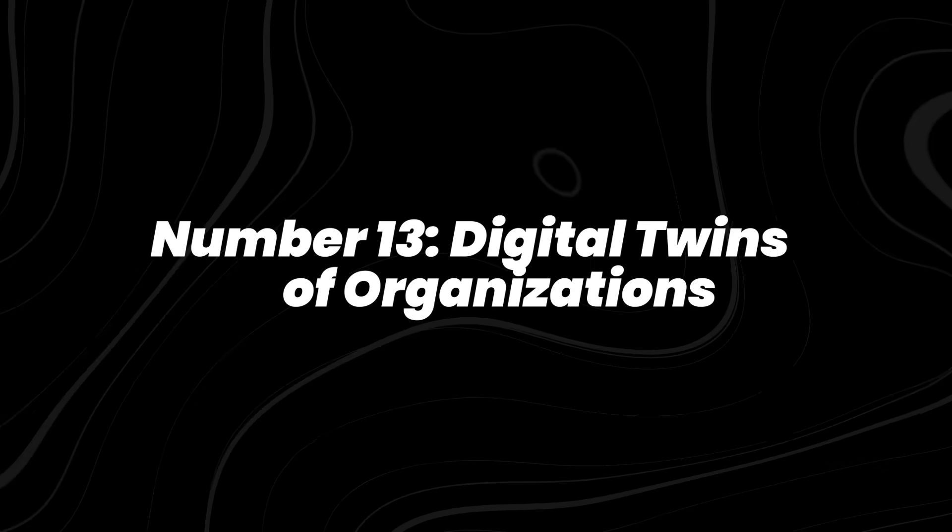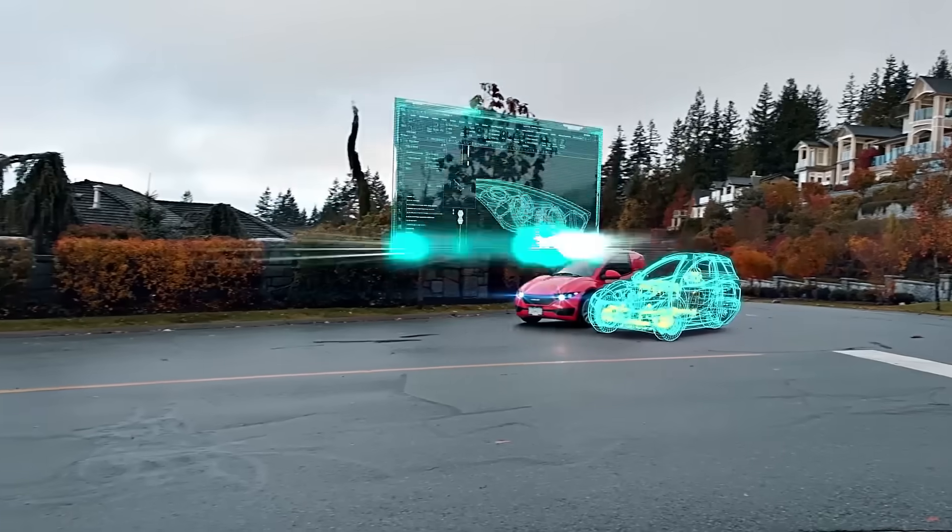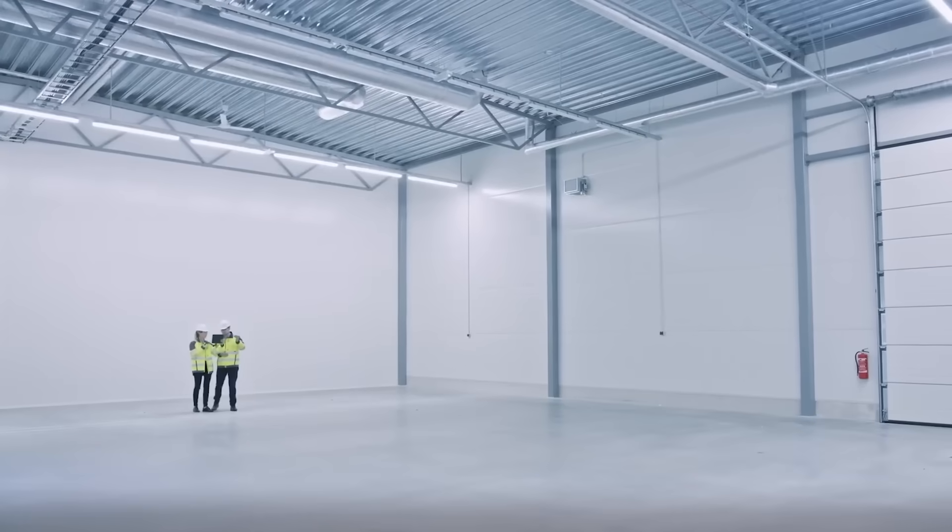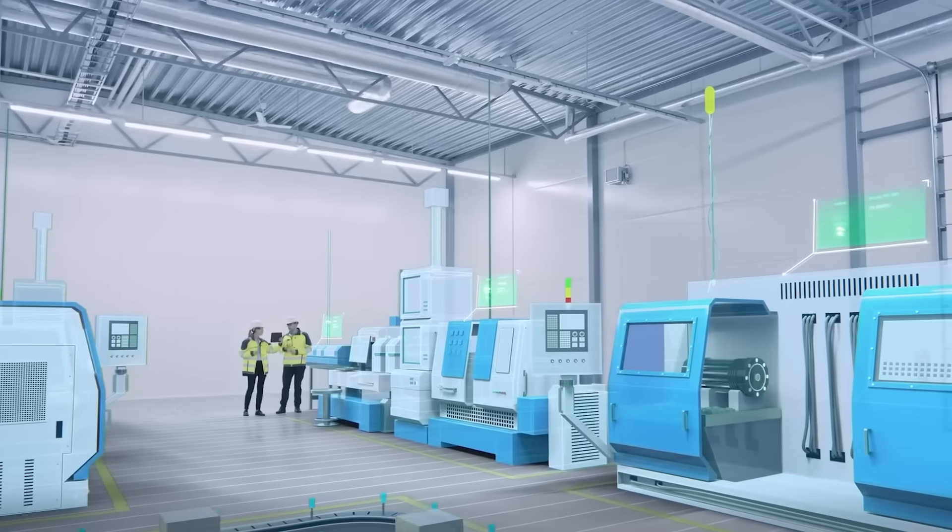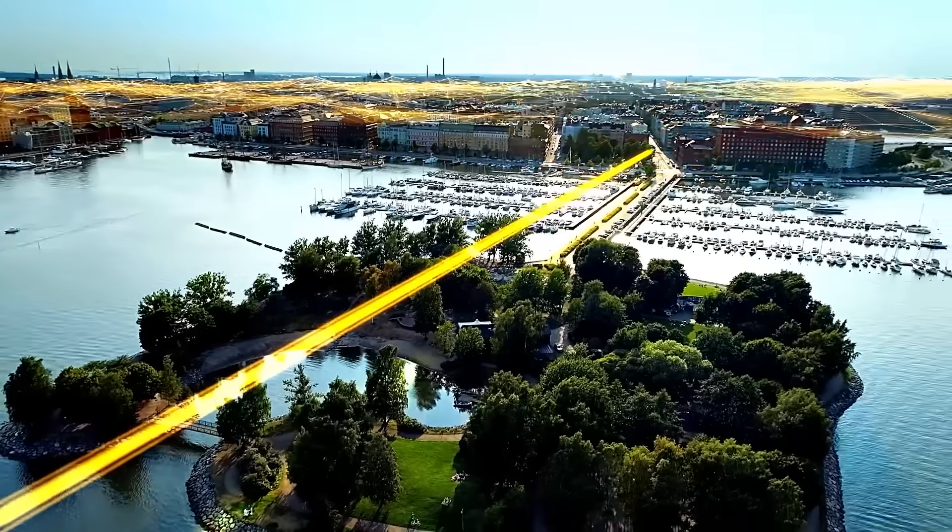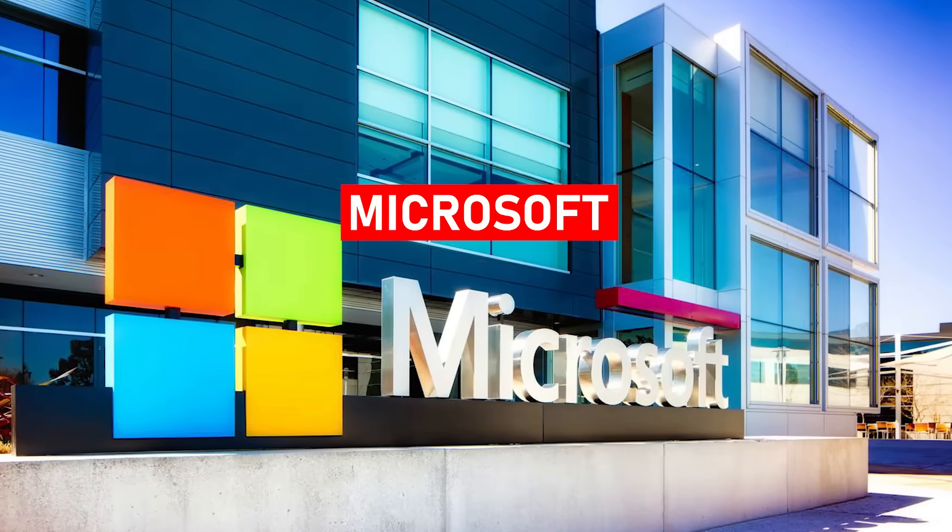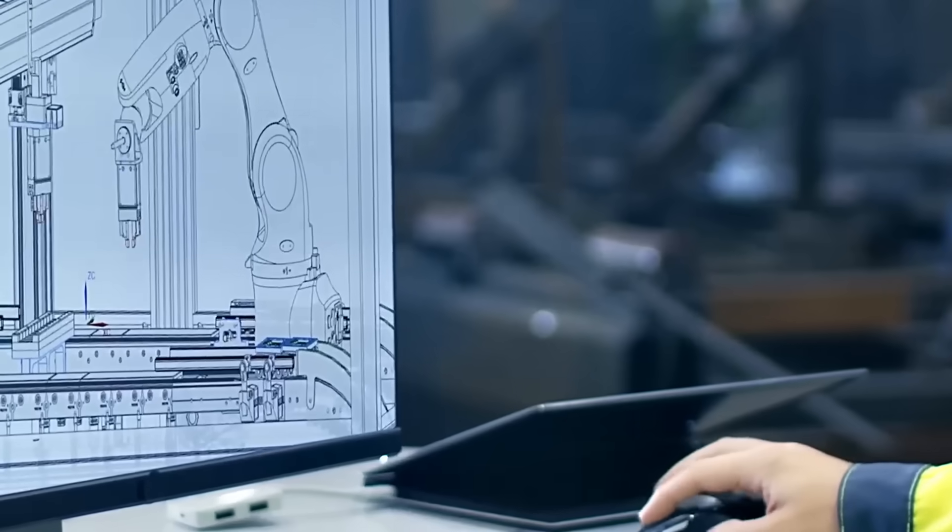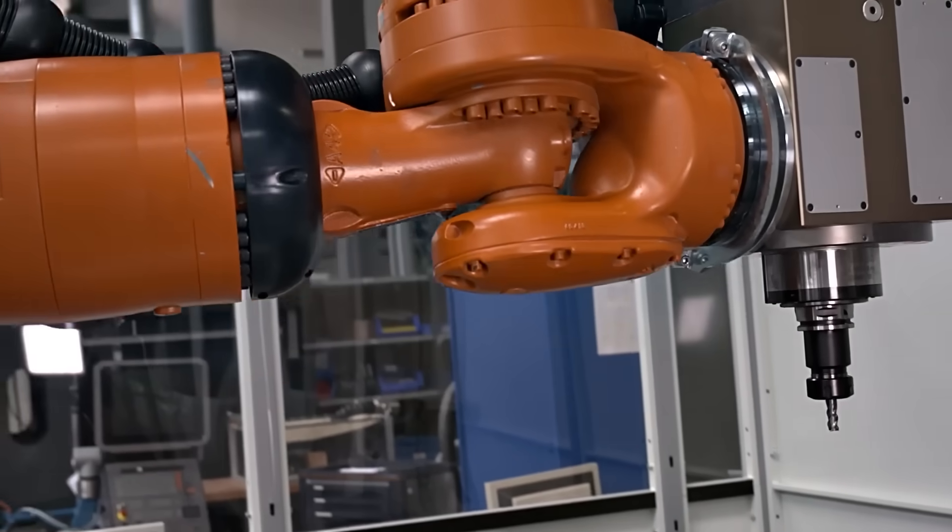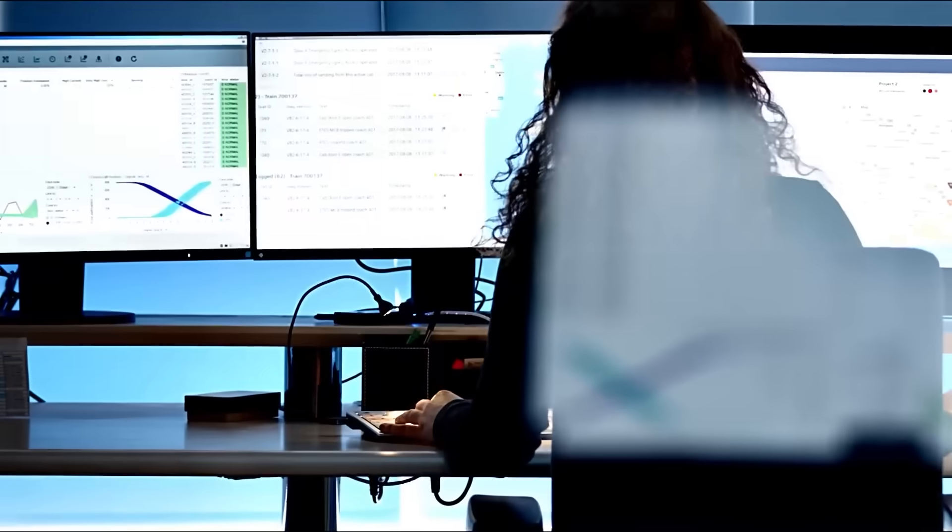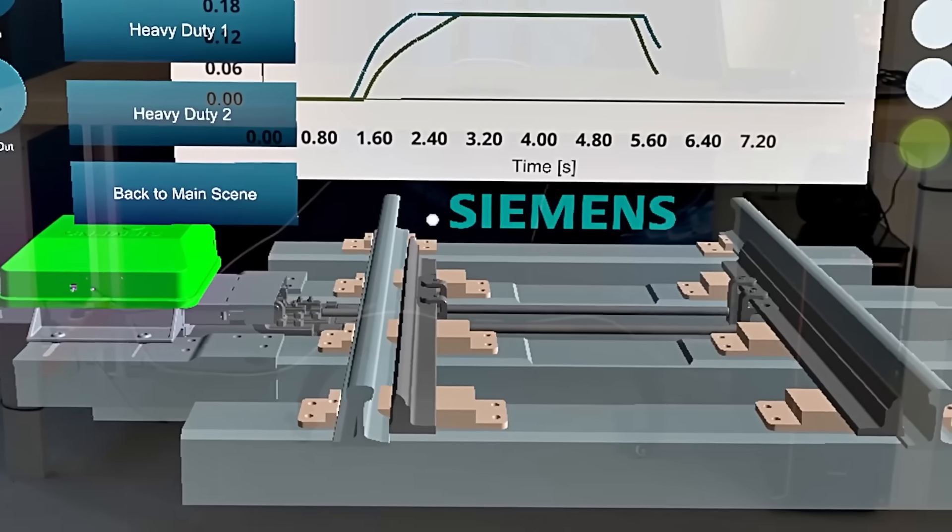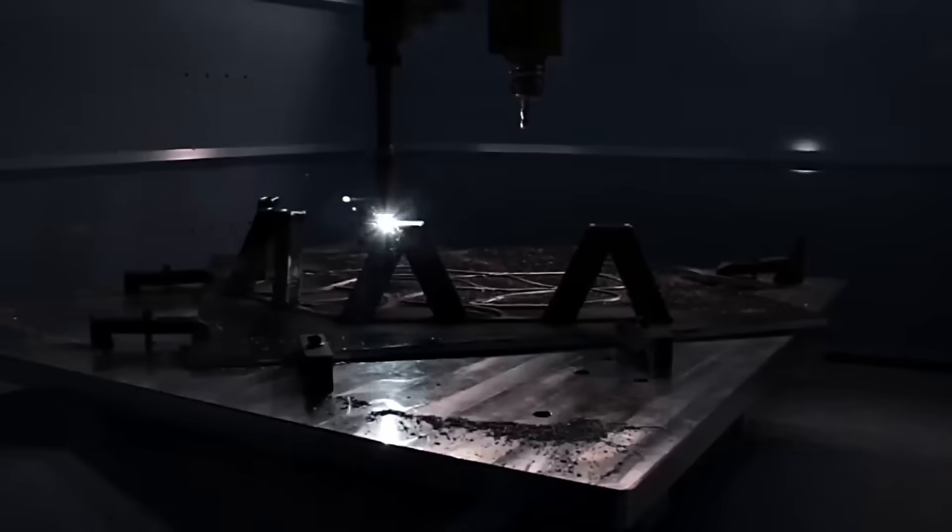Number 13, digital twins of organizations. Here's something less flashy but quietly powerful. Companies now simulate their entire operations digitally. Every process, every supply chain flow, in a virtual mirror known as a digital twin of an organization. Siemens, Microsoft, and Accenture are already leveraging DTOs to optimize performance, predict breakdowns, and test scenarios before they happen. This is industrial foresight in action, allowing businesses to model complex systems in real time and make decisions with far greater accuracy. It's a 2025 invention already changing the way organizations operate behind the scenes.